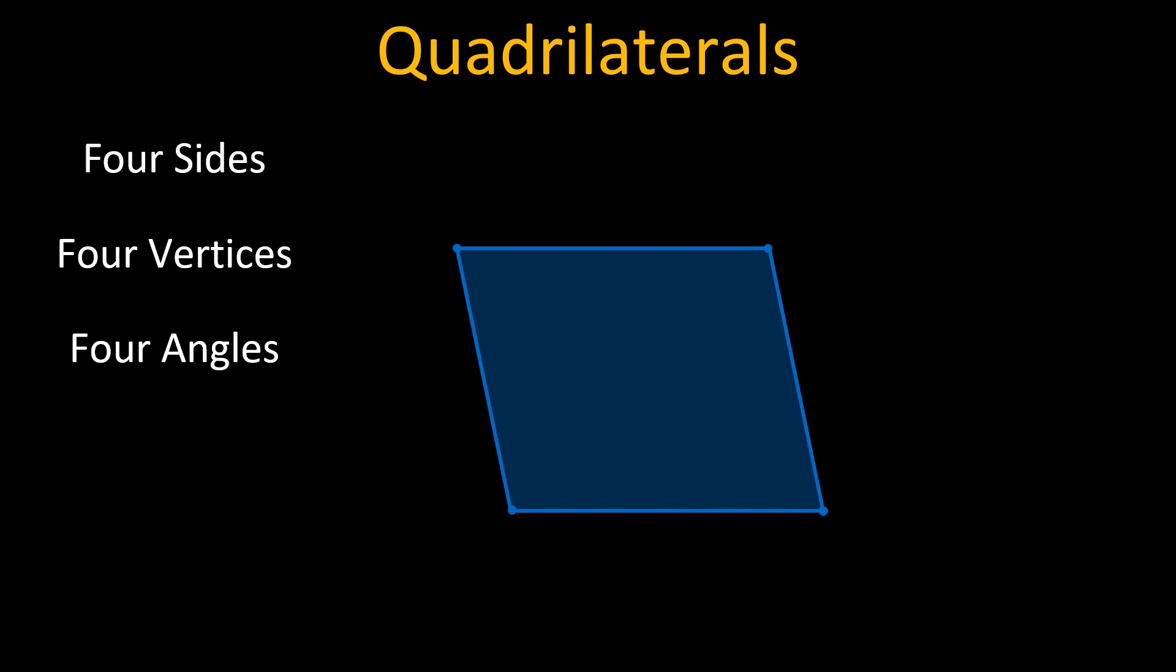This polygon has four vertices. In order to name this polygon, we have to name the four vertices. Let us call them vertex A, vertex B, vertex C and vertex D.